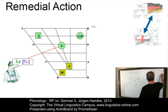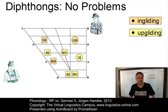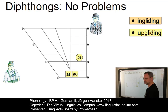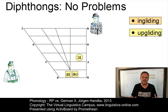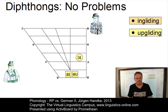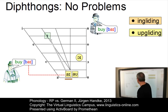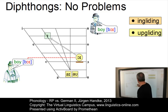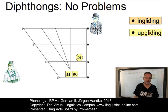Let us now look at the RP diphthongs. Of the eight RP diphthongs, the following RP phonemes are unproblematic for German learners of English — they are almost identical with the German value and do not require any remedial action. We have the AI as in BY, the AU as in NOW, and the OI as in BOY — not problematic for German learners of English.